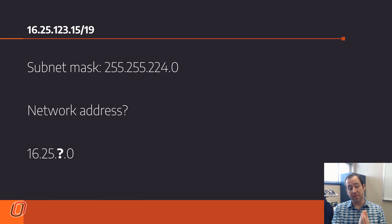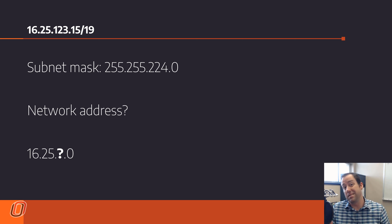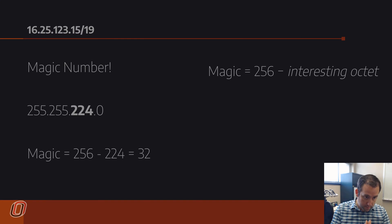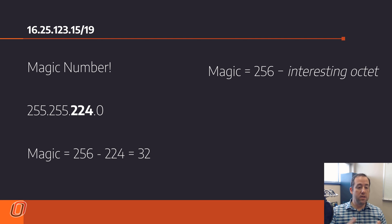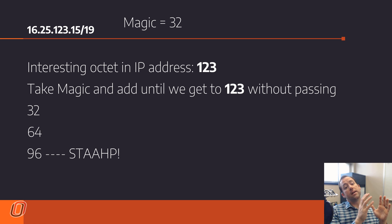With the subnet mask of 255.255.224.0, we get the network address by taking the number where there's a 255 and pulling from the IP address, and putting a zero where there's a zero in the subnet mask. So it's 16.25.something.0 — we don't know the middle yet. For the interesting octet, the number in the subnet mask is 224, so we take 256 minus 224, which gives us 32. That is our magic number. We then add 32 to itself until we reach 123 without passing it.